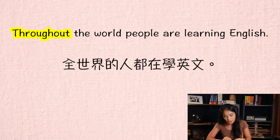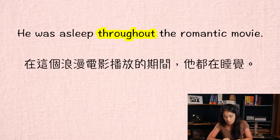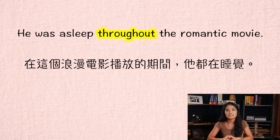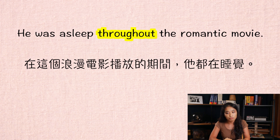再來「在期間內」我們怎麼造句呢?He was asleep throughout the romantic movie——在這個浪漫電影播放的期間,他都在睡覺。所以在電影播放的期間也可以用throughout。這樣throughout、against還有without,希望大家都有學會囉。喜歡我們的影片要記得follow我們的Instagram,還有subscribe我們的YouTube,我們下次再見,拜拜!